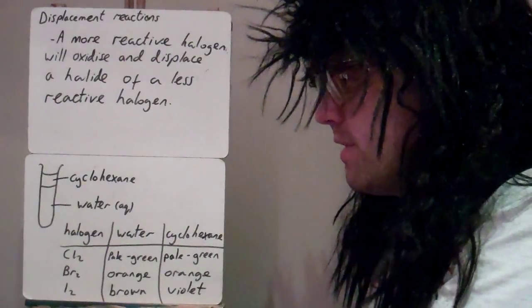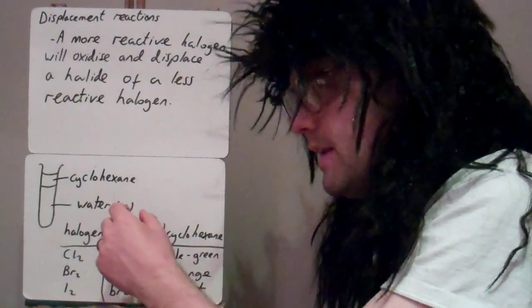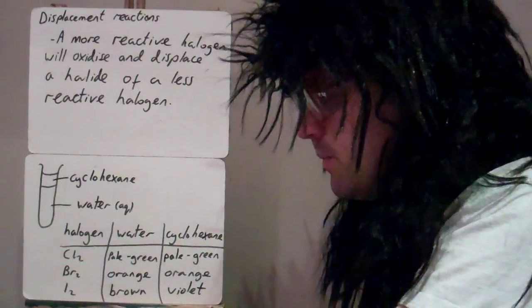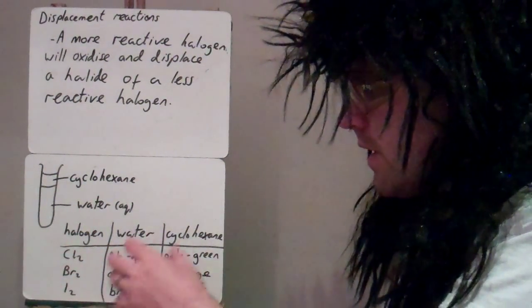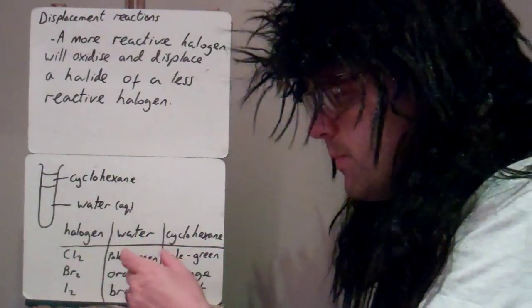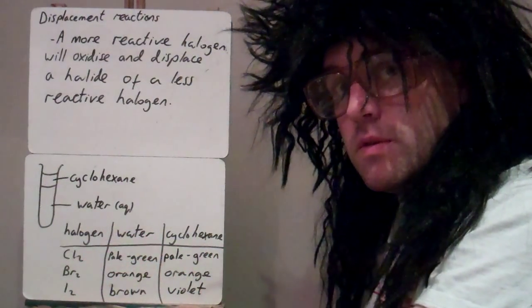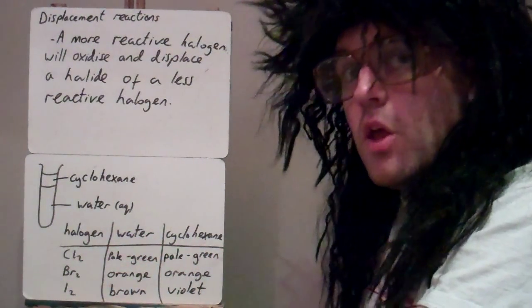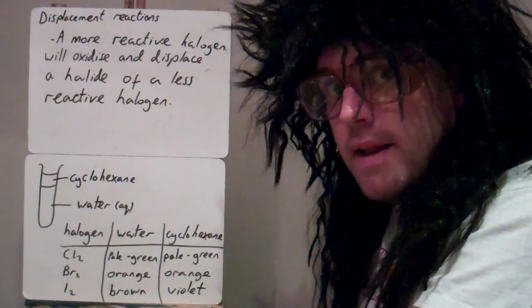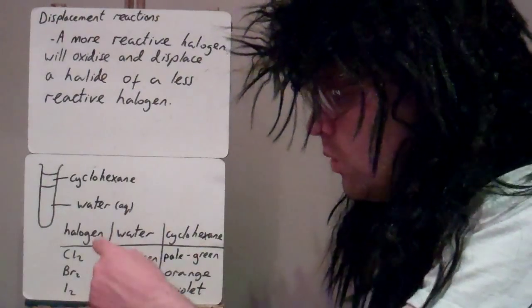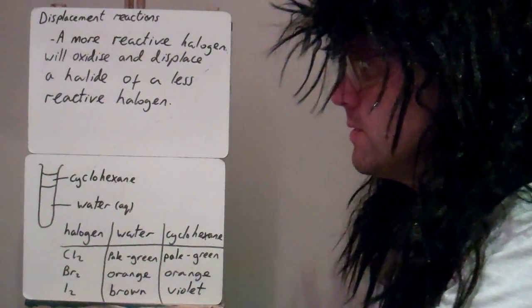There's no reaction with the cyclohexane — it just dissolves these halogens. The colours that you see tell us what halogens are present, not what halide ions — it tells us what halogens are present.